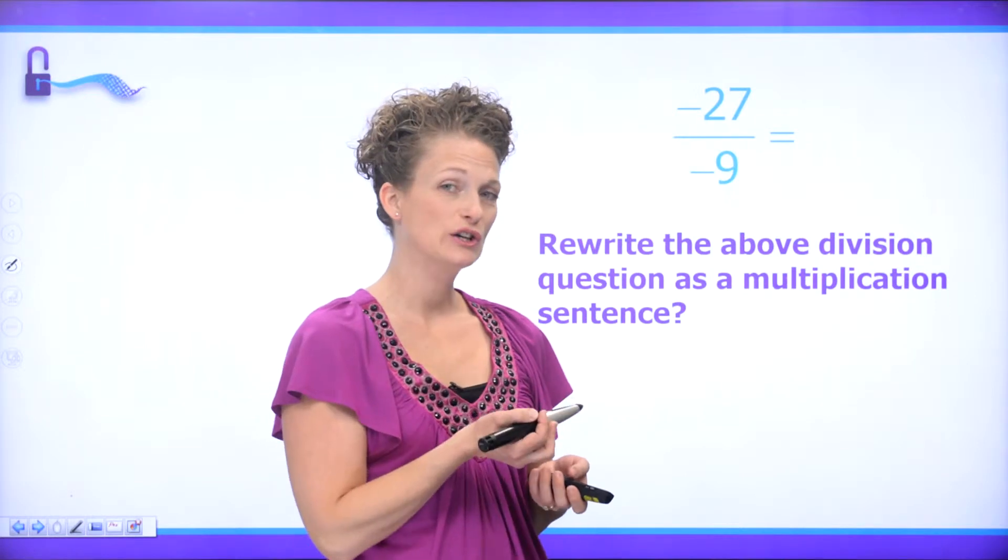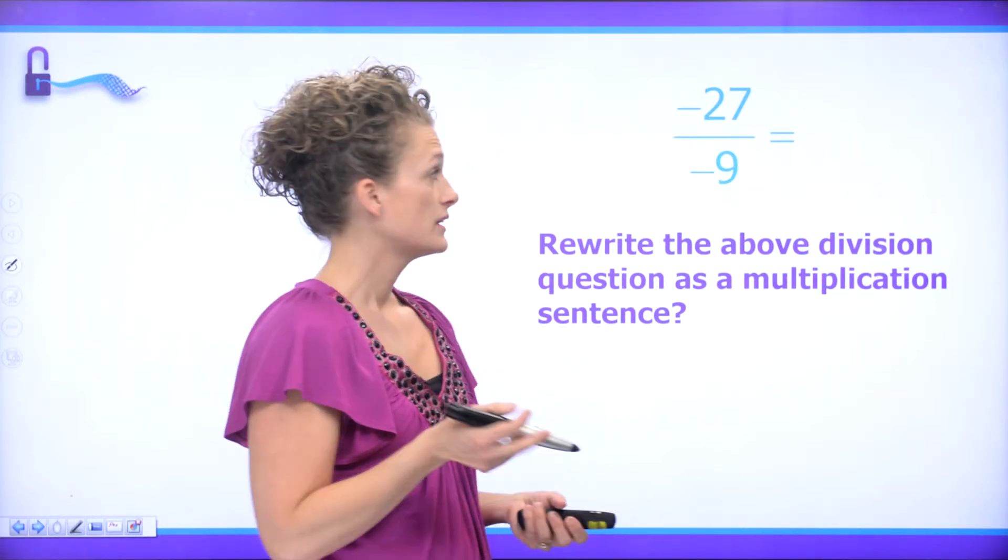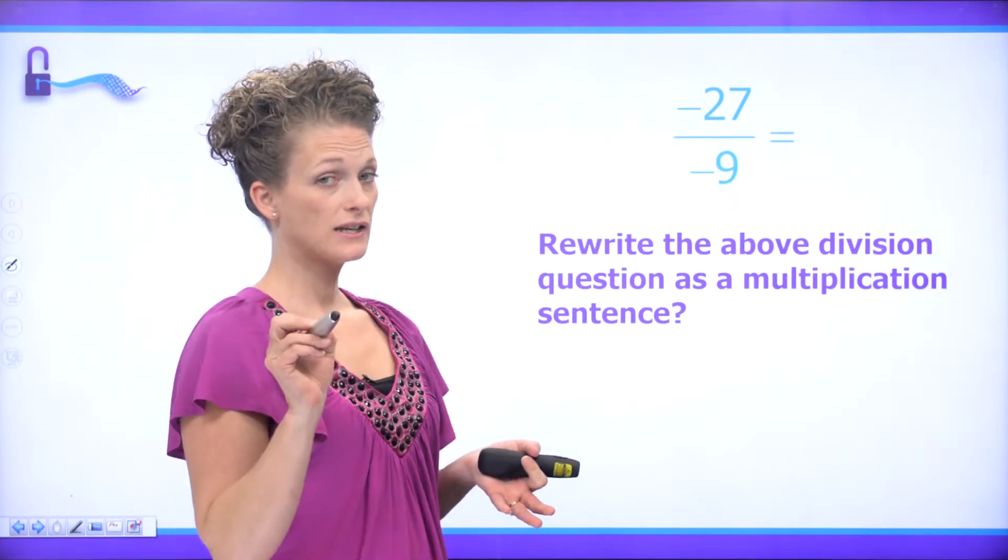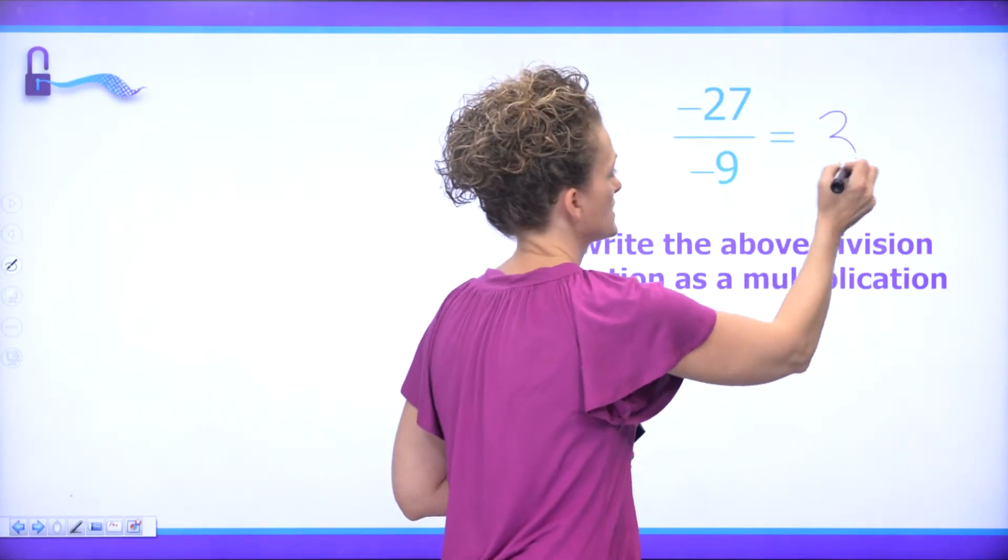Now let's have a look at negative 27 divided by negative 9. Now it works very much the same as it did with multiplication. A negative divided by a negative ends up being a positive. What's that you say? Okay, let's rewrite this as a multiplication sentence to see if that's correct.